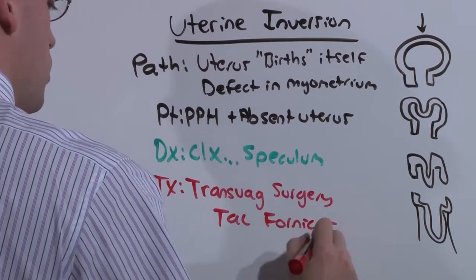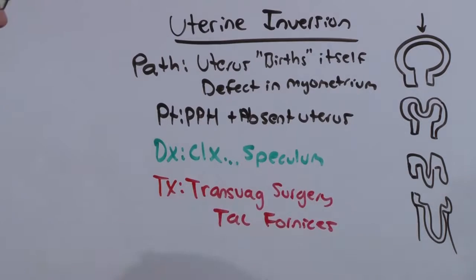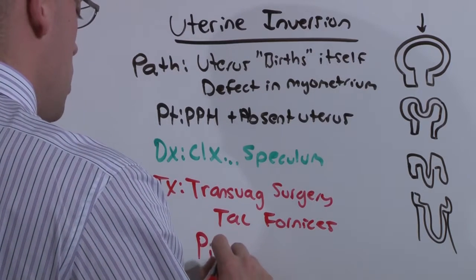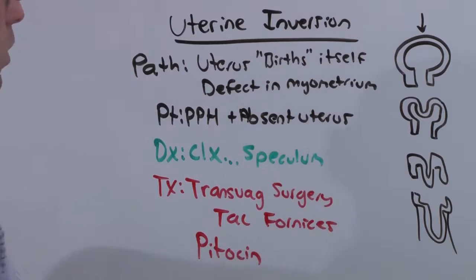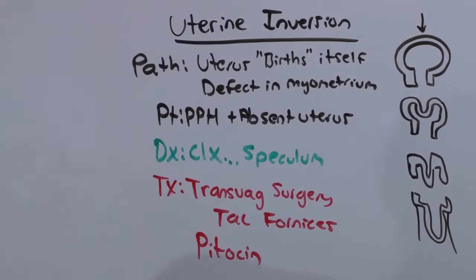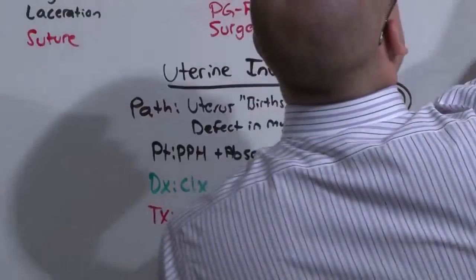And after surgery, if you put it back and it still continues to bleed, now that it's held in place, you can give Pitocin to help the uterus contract down. Next, let's talk about vaginal lacerations.